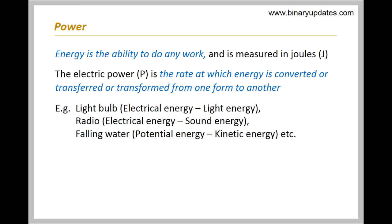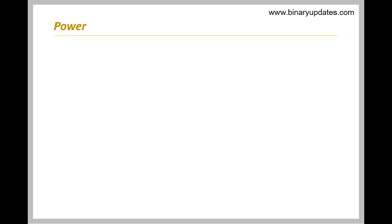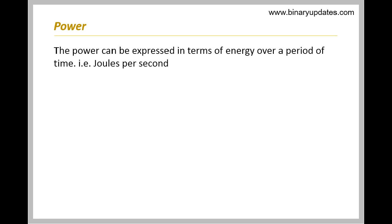The electric power is a measure of how much and how fast energy is converted. The power can be expressed in terms of energy over a period of time, that is joules per second.